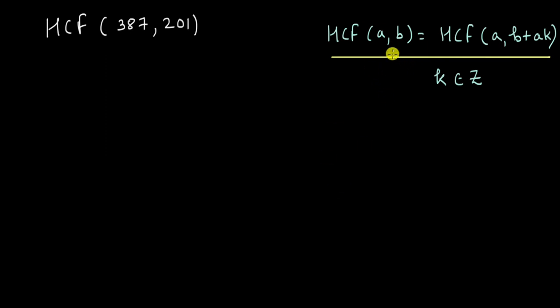What it is saying is if you have two numbers a and b keep one of the numbers as it is. For the second number you can add any multiple of the first number. And because k is an integer and integers have negative numbers you can even subtract any multiple of the first number.